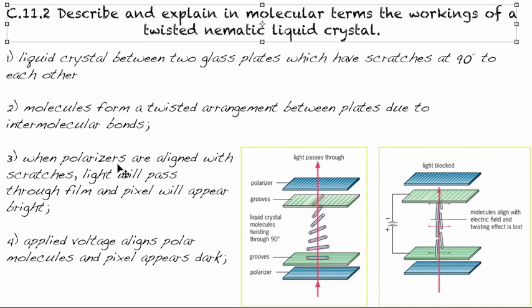When the polarizers are aligned with the scratches in the glass, the light will pass through and the pixel will appear bright.